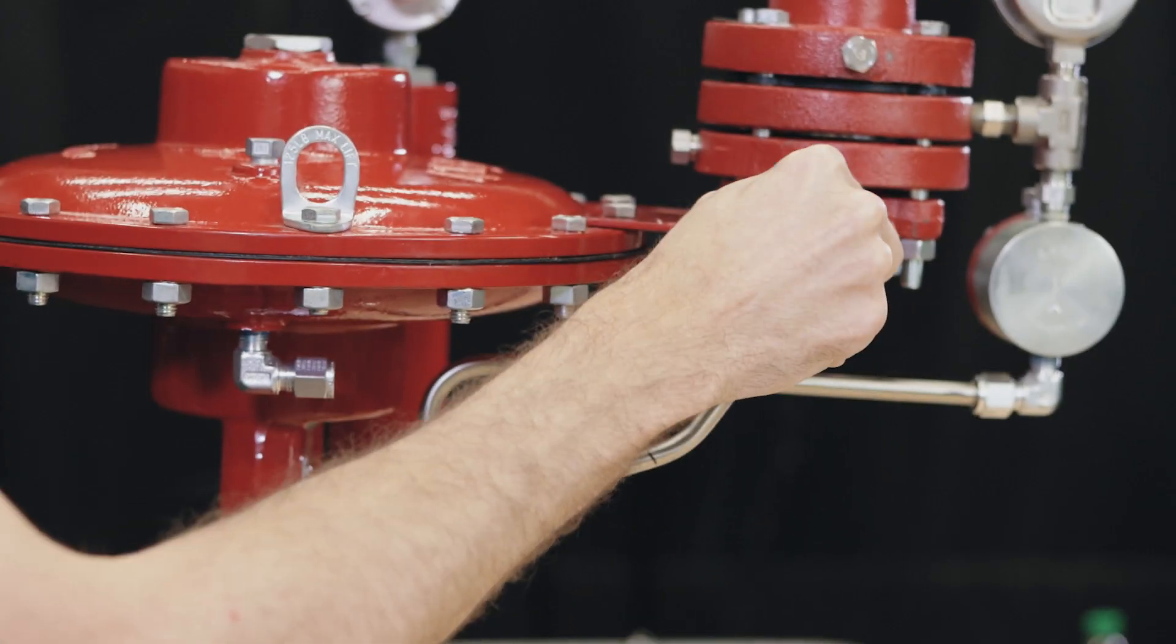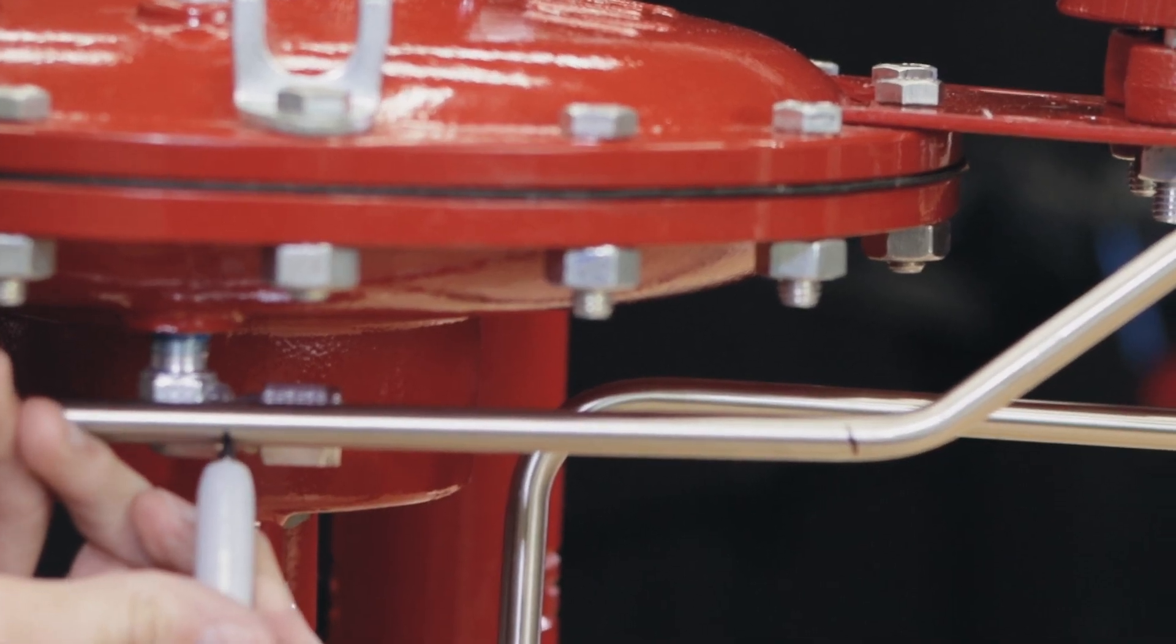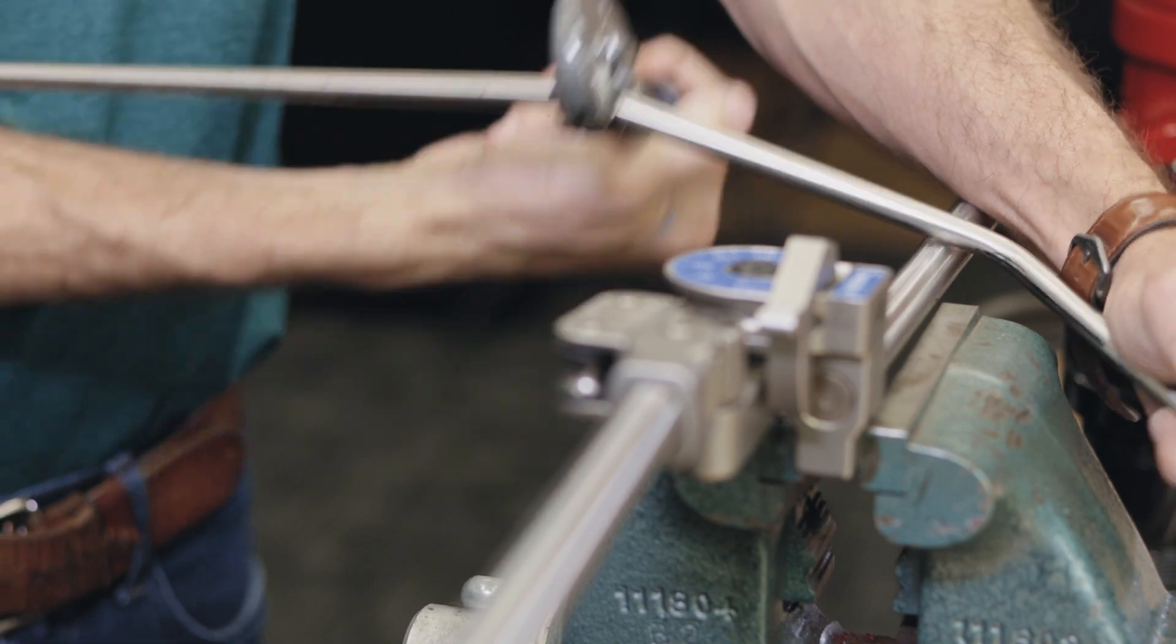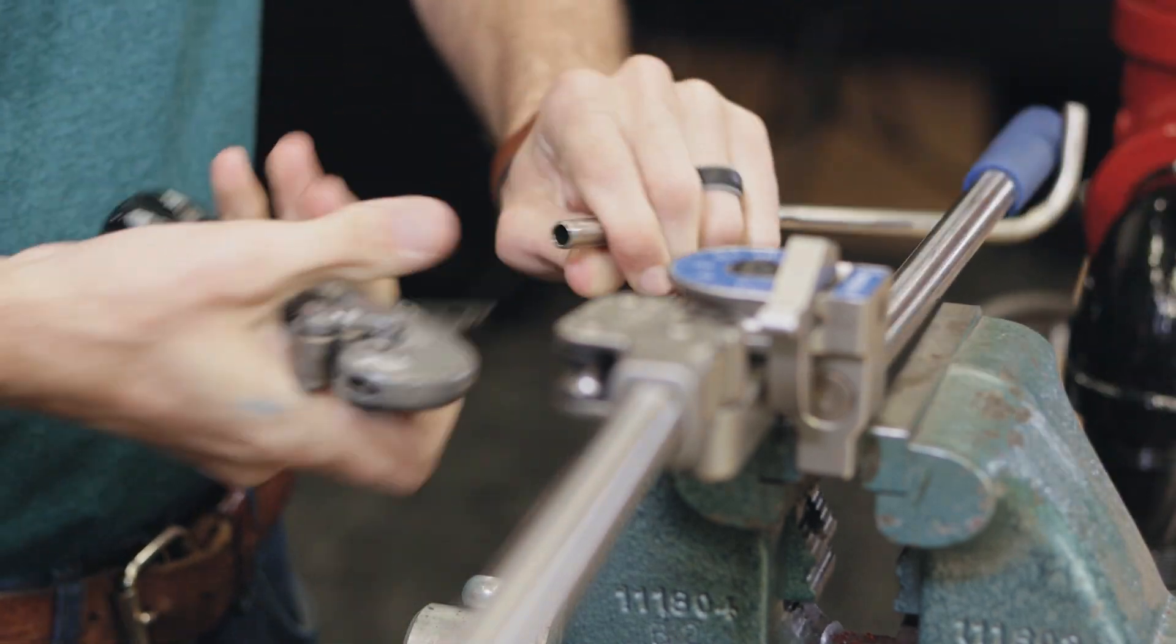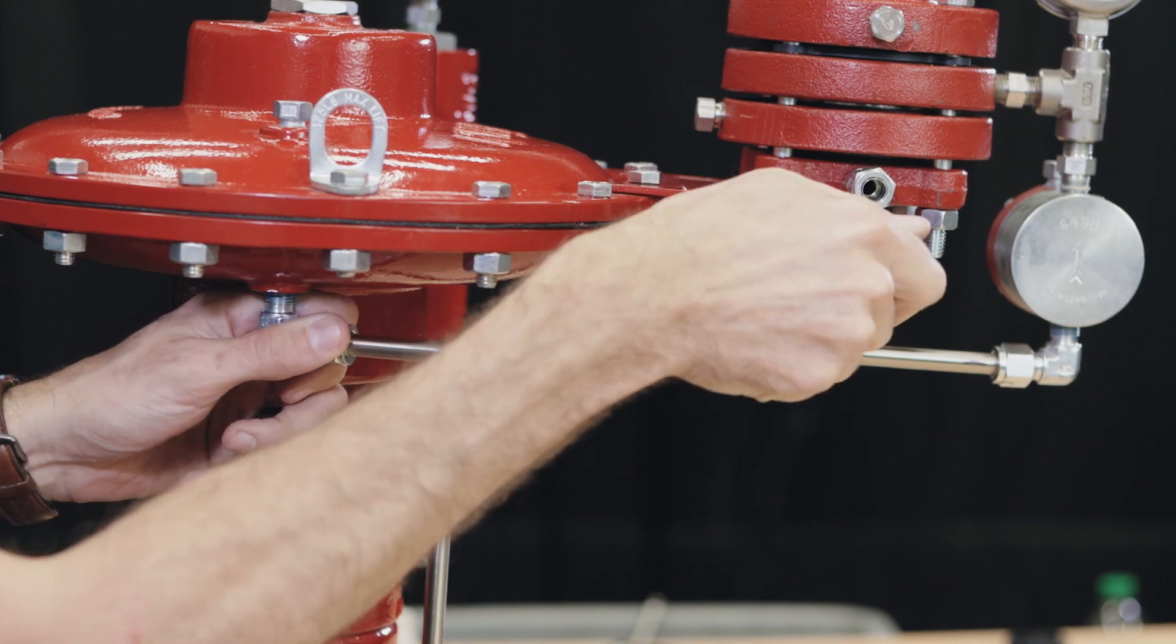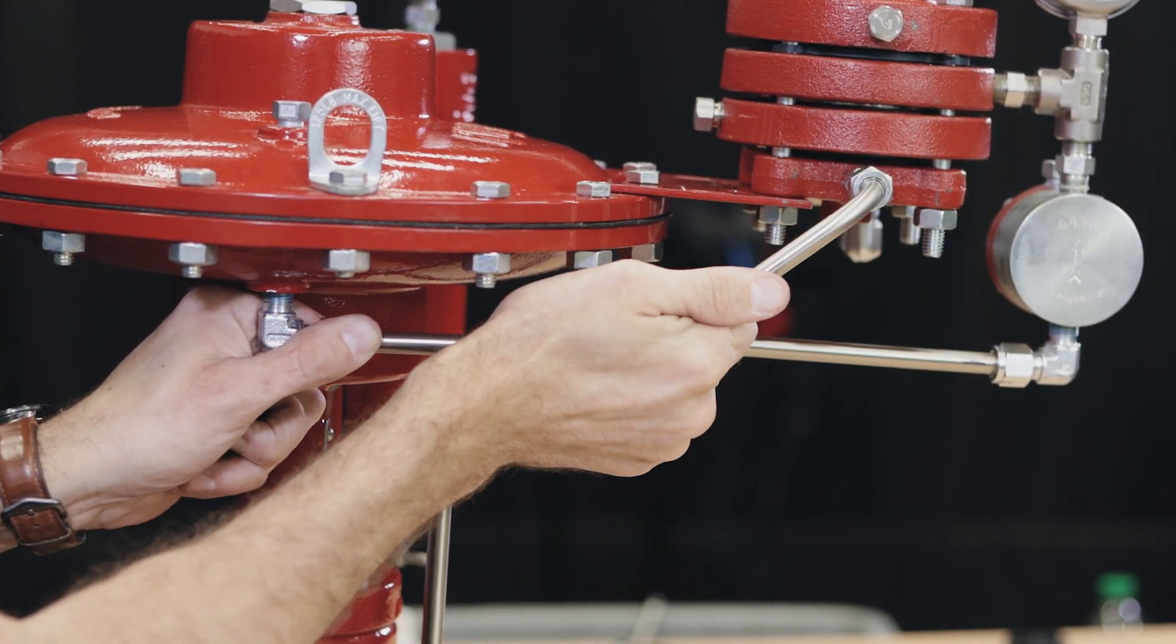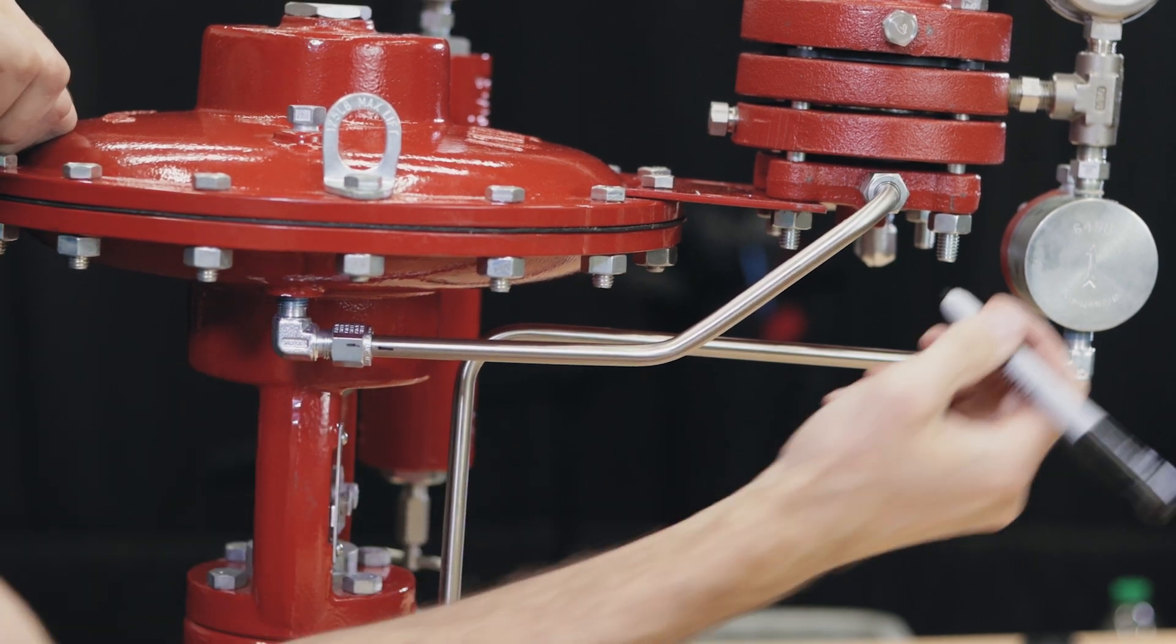With our offset bend ready, mark the final length of the tubing near the shoulder of the fitting. Make your cut and deburr the end. Once the piece is in place, make reference marks on the fitting and tubing to fully tighten the connectors.